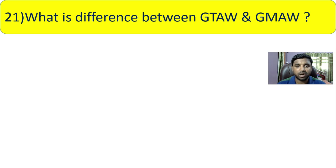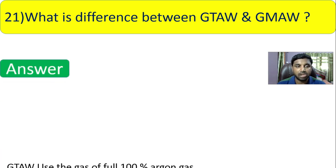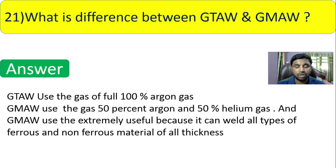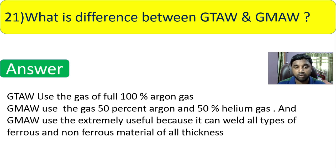Question 21: what is the difference between GTAW and GMAW? GTAW uses 100% argon gas, while GMAW uses a mixture of 50% argon and 50% helium gas. GMAW is extremely versatile and can weld all types of ferrous and non-ferrous materials of all thicknesses.